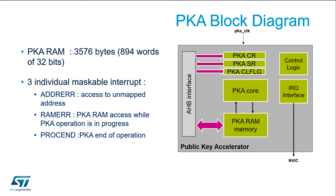There are three individual maskable interrupts: two for errors when you try to access an unmapped address, and another one if you try to access PKRAM while a PKE operation is in progress.